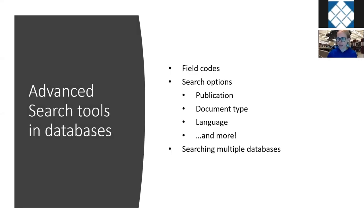Let's start with advanced search tools that you can use within databases. There are many advanced tools, so I'll show you just a few: searching by field codes, by publication, by document type, by language, and in multiple databases at once. I'm going to go to our library website and our A to Z resource list to open up the Academic Search Premier database to show you these tools. Academic Search Premier is an EBSCO database. Other database platforms like ProQuest might look a little bit different, but they all generally have the same or very similar tools, so the concepts we talk about here will translate to other platforms.